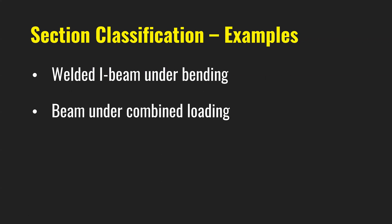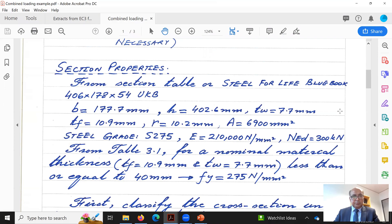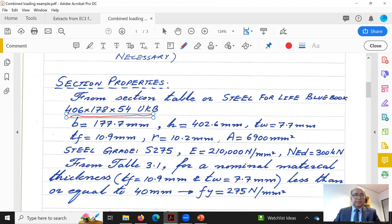Now let us move to the second example: a beam under combined action of bending and compression. The member carries a major axis bending moment and an axial force of 300 kN. We need to show that for a 406×178×54 UKB section in grade S275 steel, flanges are Class 1 and web is Class 4 under pure compression, and flanges are Class 1 and web is Class 2 under combined loading.